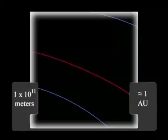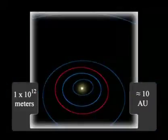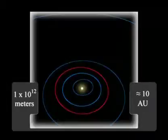If we go up by another factor of 10 to 10 astronomical units from the Earth, we can see the orbits of the inner four terrestrial planets plus part of the orbit of Jupiter.